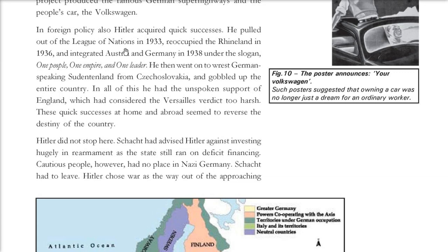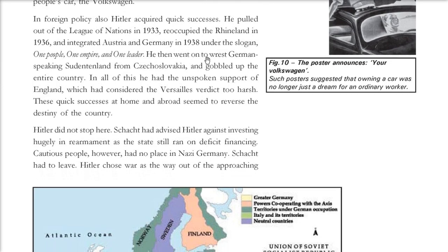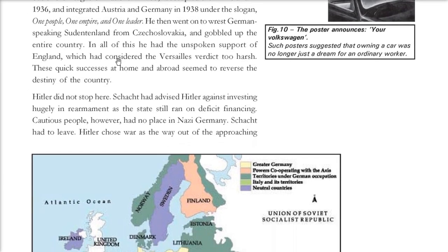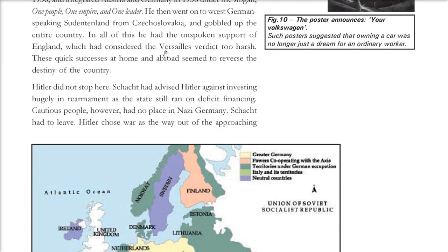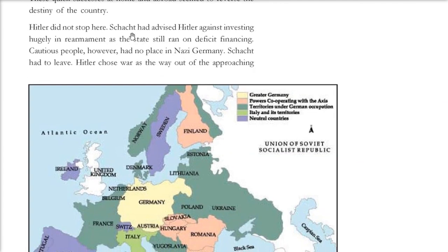He also acquired the German-speaking Sudetenland in Czechoslovakia, with unspoken support from England, which thought the Versailles Treaty had been too harsh on Germany. But Hitler continued his territorial grabbing. His economic advisor Schacht had warned that Hitler should not invest hugely in rearmament as the state still ran on deficit financing, but such people had no place in Nazi Germany and Schacht had to leave.